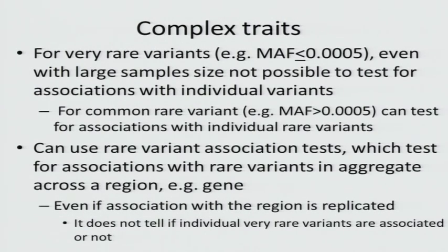For very rare variants, we will not be able to test individual rare variants even if we have very large sample sizes. In order to detect association, we have to analyze the rare variants in aggregate—usually aggregating variants across a region, which is typically a gene. This becomes more problematic when we want to look outside of gene regions, because it's very difficult to know which rare variants we should aggregate. I don't have an answer for what we should do when looking outside of gene regions.